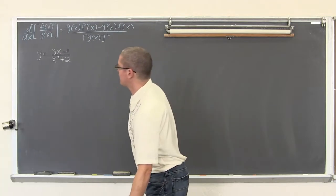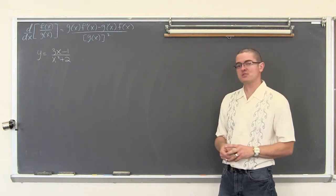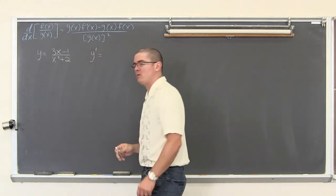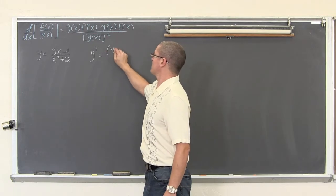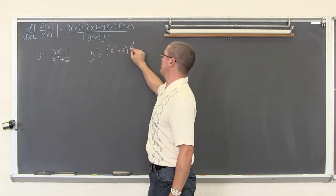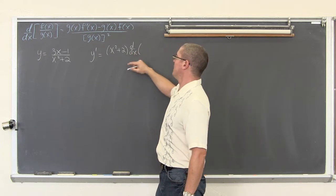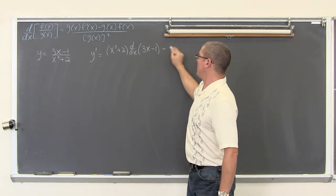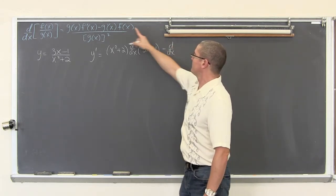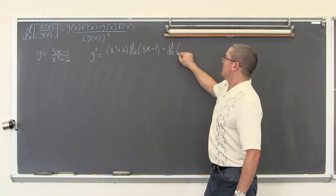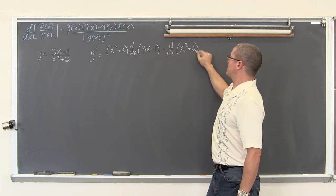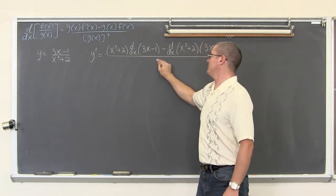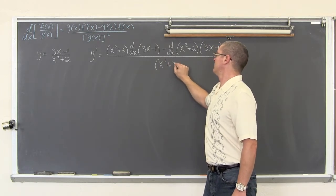We have y equals 3x minus 1 divided by x squared plus 2. y prime, or the derivative of y, is going to be equal to the denominator x squared plus 2 times the derivative with respect to x of the numerator which is 3x minus 1, minus — now we are going to take the derivative of the denominator g prime — so that will be the derivative of x squared plus 2 times the numerator, all over the denominator squared.